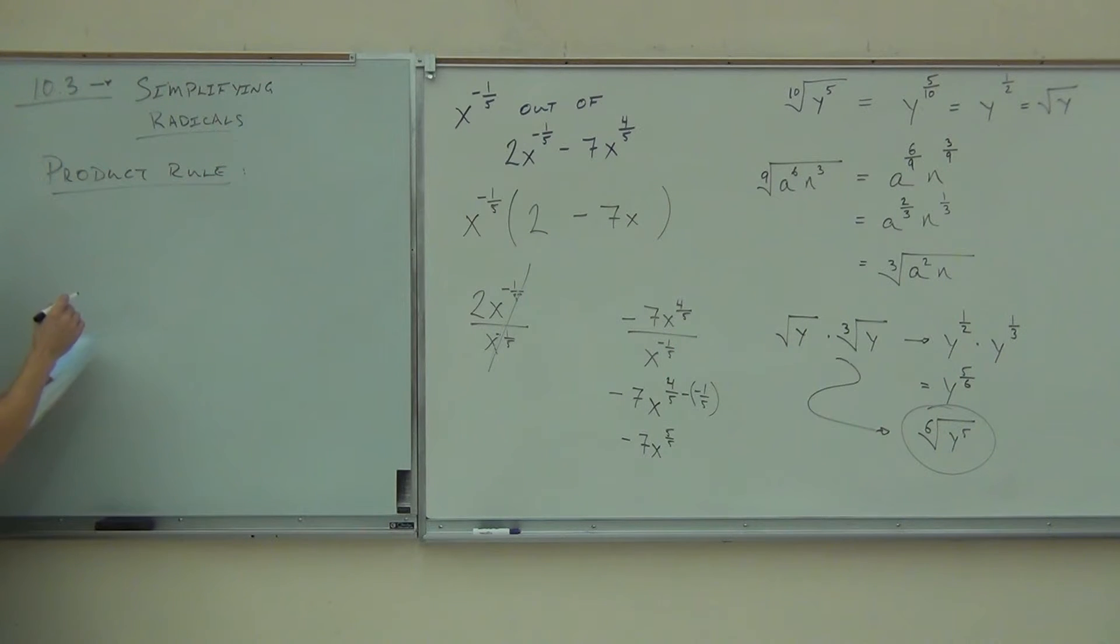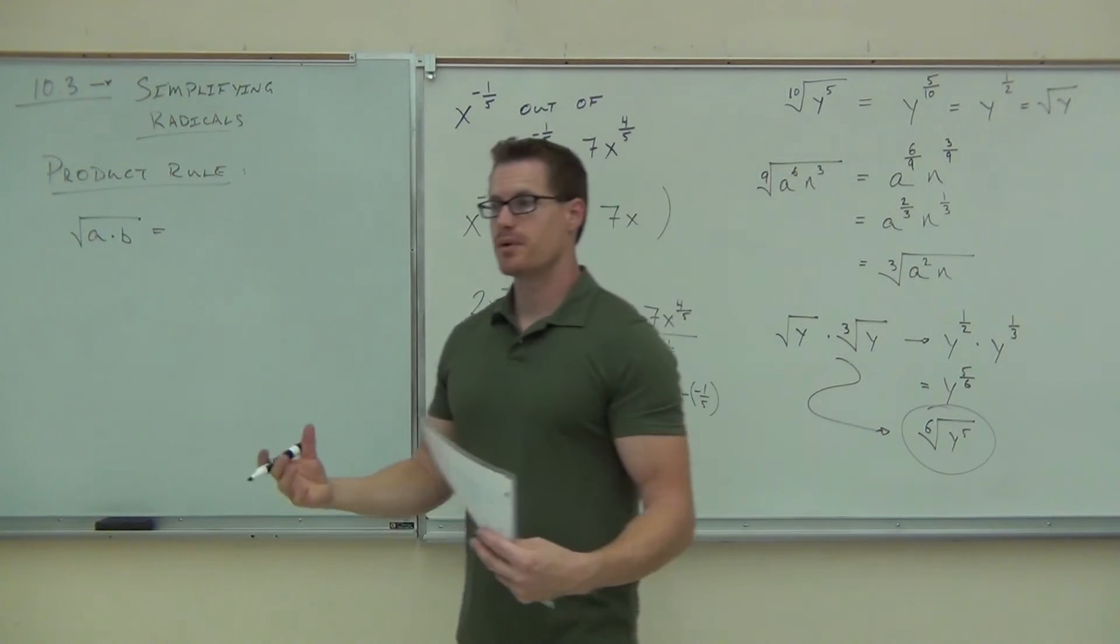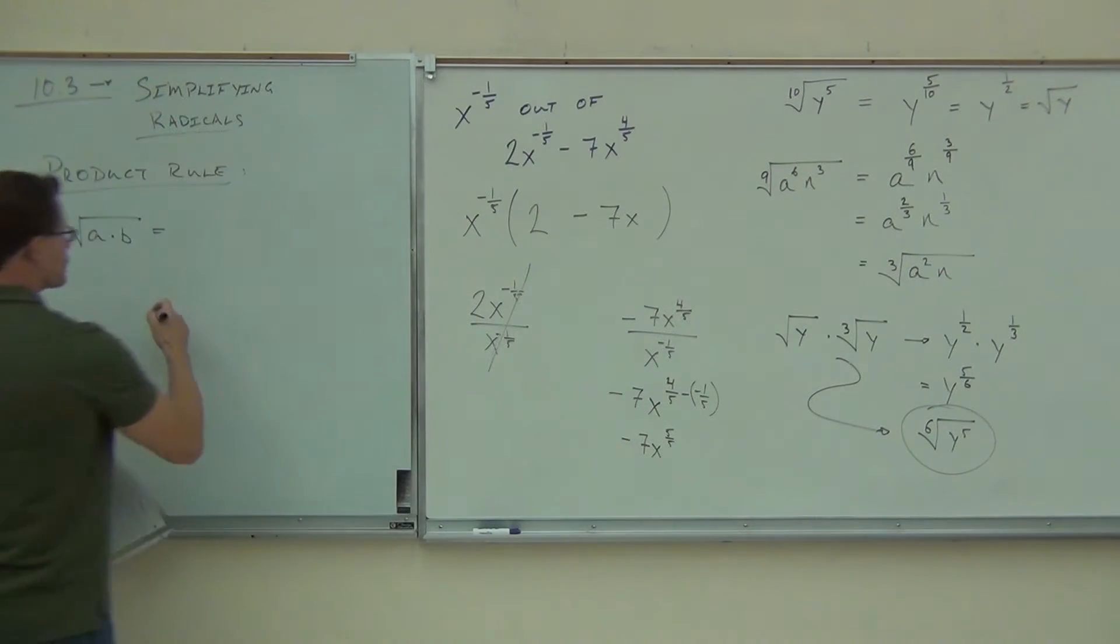And here it is. It says if you have a square root of A times B, a square root can be broken up. The product can be broken up. For instance, if I have a square root of A times B, that comes down to the square root of A times the square root of B.